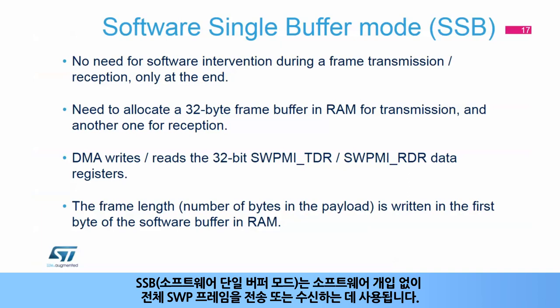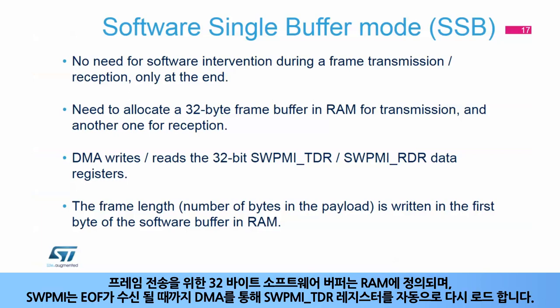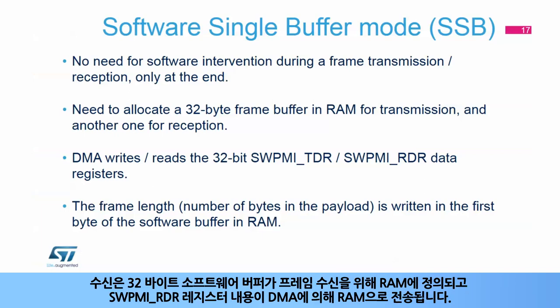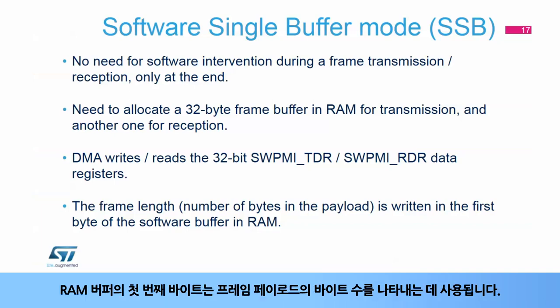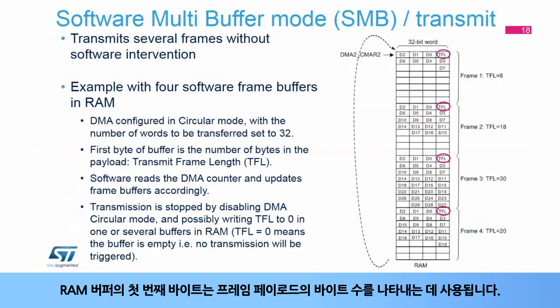Software single buffer mode, or SSB, is used to transmit or receive an entire SWP frame without software intervention. A 32-byte software buffer for frame transmission is defined in RAM, and the SWPMI automatically reloads the SWPMI TDR register through the DMA until the end of frame is received. For reception, a 32-byte software buffer is defined in RAM, and the SWPMI RDR register content is transferred to RAM by the DMA. The first byte in the RAM buffer is used to code the number of bytes in the frame payload.